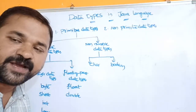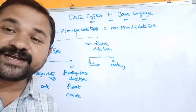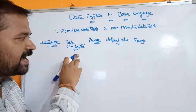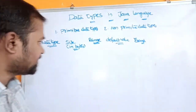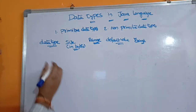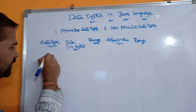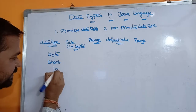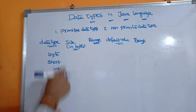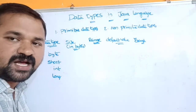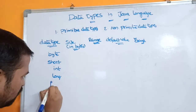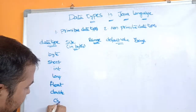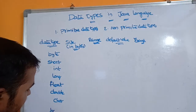Now let's see what is the size, range, and default value of each data type. The integer data types are: byte, short, int, and long. The floating point data types are float and double. We also have character and boolean data types.